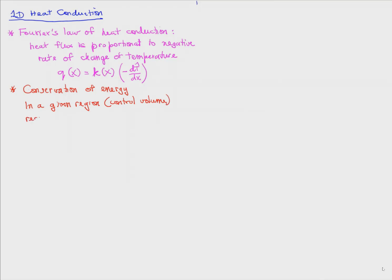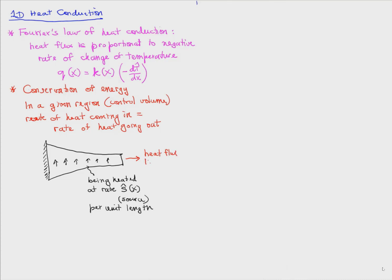The other physics is conservation of energy, which says that in a given region called a control volume, the rate of heat coming in equals the rate of heat going out. Let's consider a one-dimensional region, as shown here, which is being heated by a heat source Ŝ(x) per unit length.